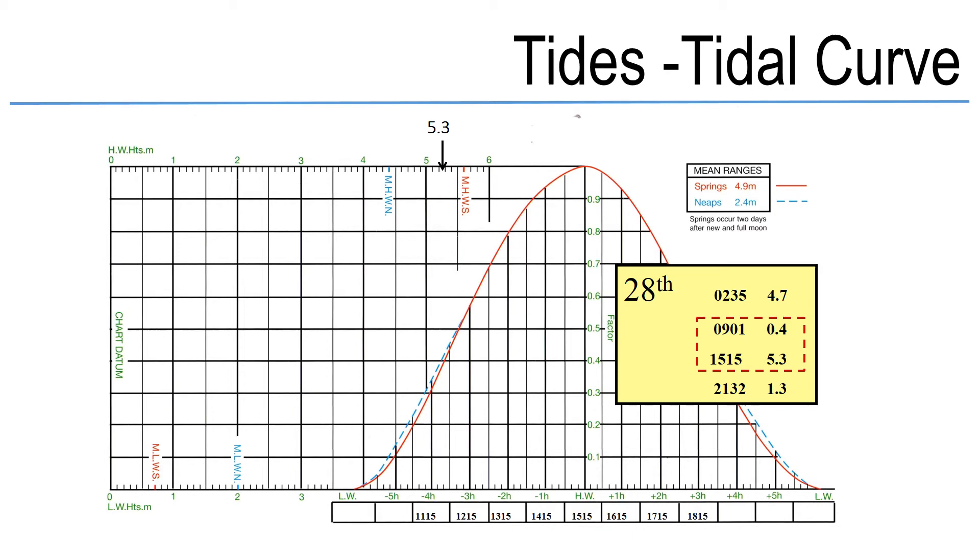Similarly I now need to plot my low water height on the bottom low water height scale. So again finding the point 0.4 and putting a small mark there.